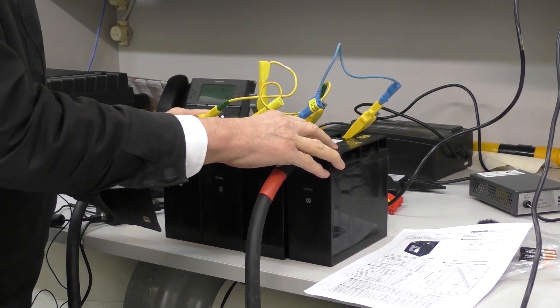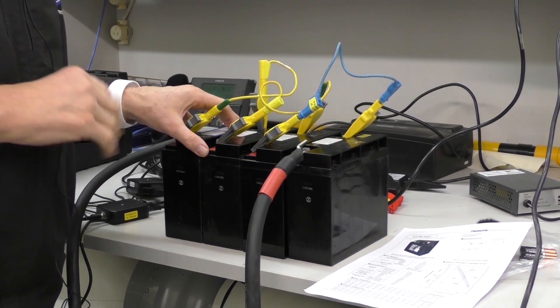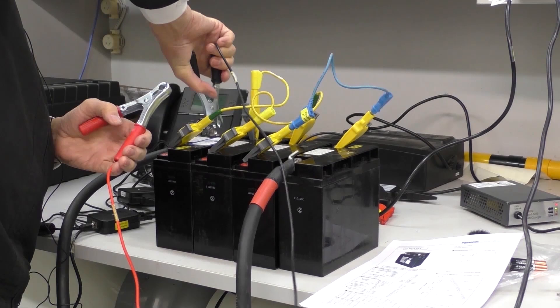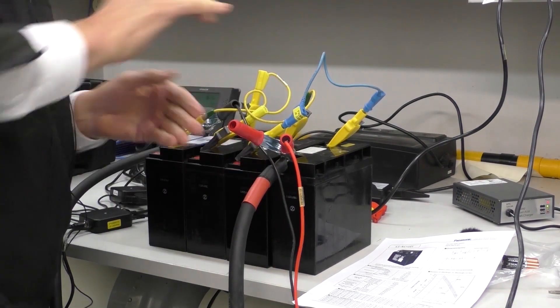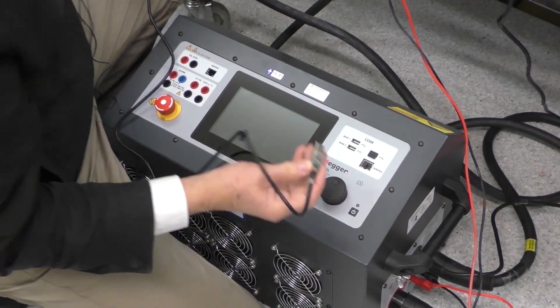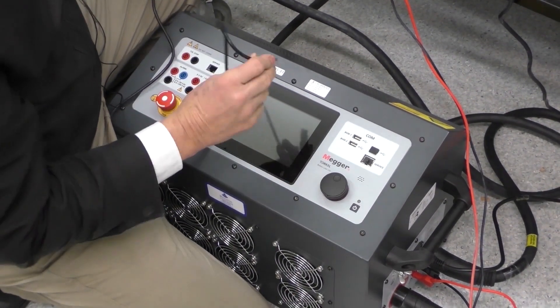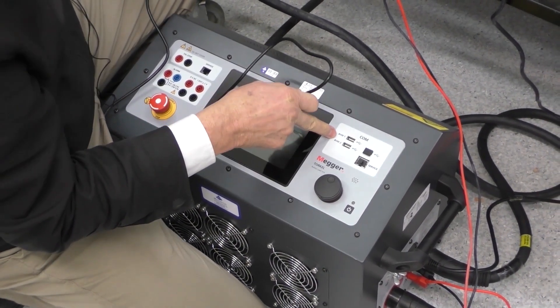Now I'll go through, I'll now connect up the voltage sensing. Here's our voltage sensing leads. I'll put those on there. So they're doing the sense. Now I need to connect up the BVM, which is the voltage measurement module.